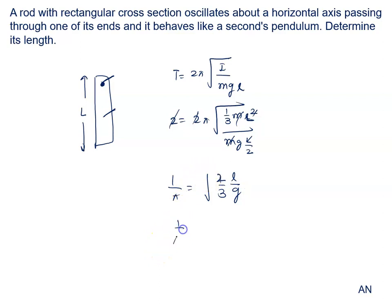We square both sides: 1 upon π² equal to 2L upon 3 into g. We get the value of L. It is 3g upon 2π².